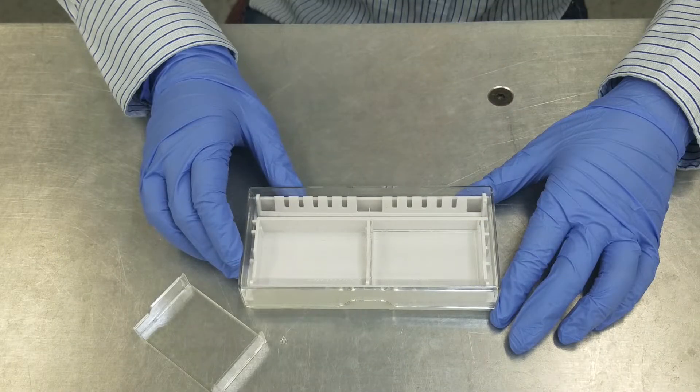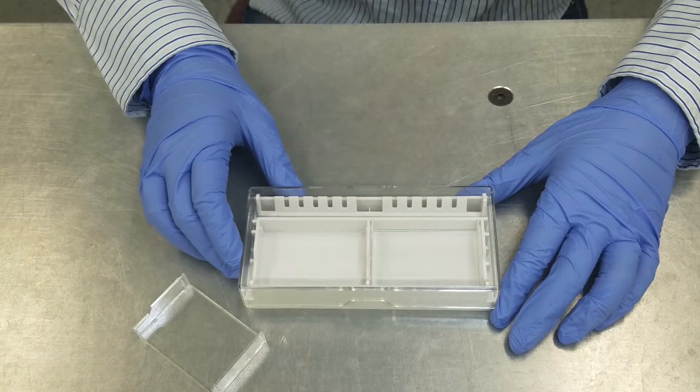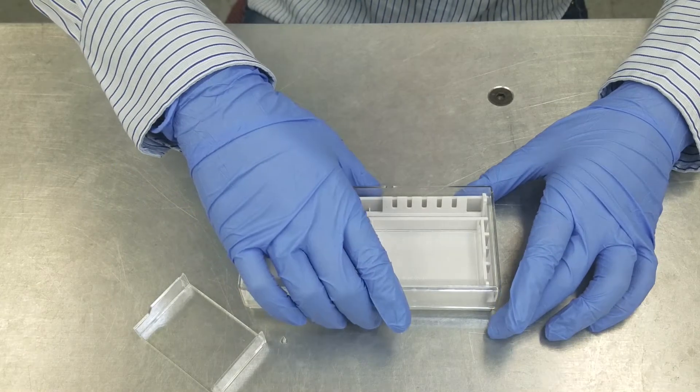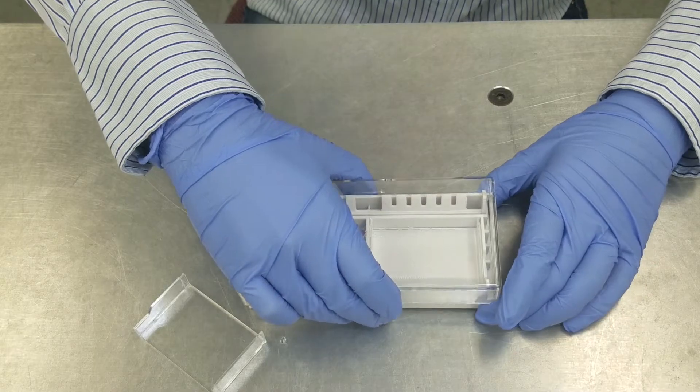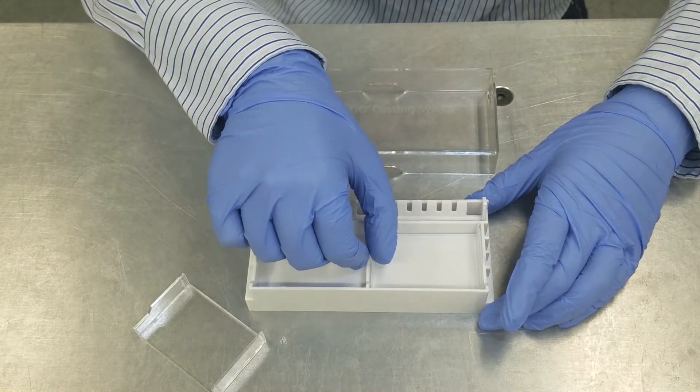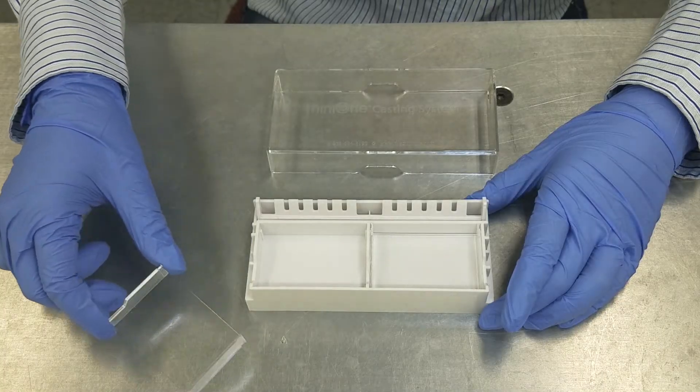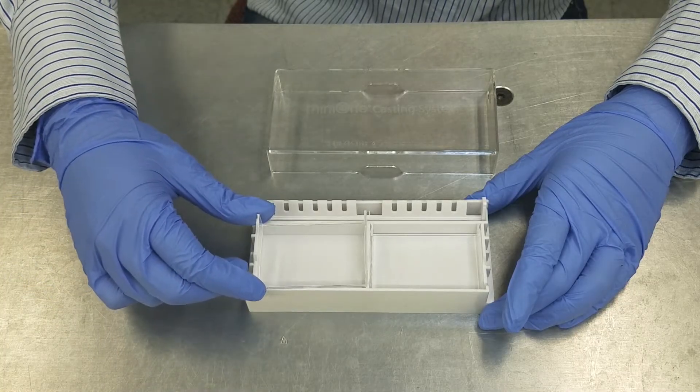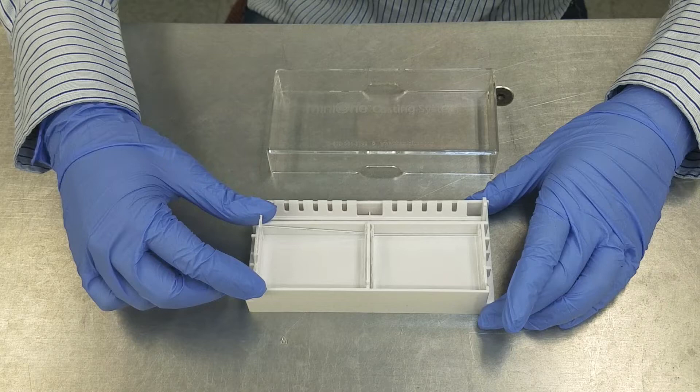The gel casting stand is designed to allow for up to 2 gels to be made at the same time. Remove the clear hard plastic lid and check that the acrylic gel casting trays are in the stand. If not, place the trays into the stand. They should fit smoothly in only one orientation and should not be forced.